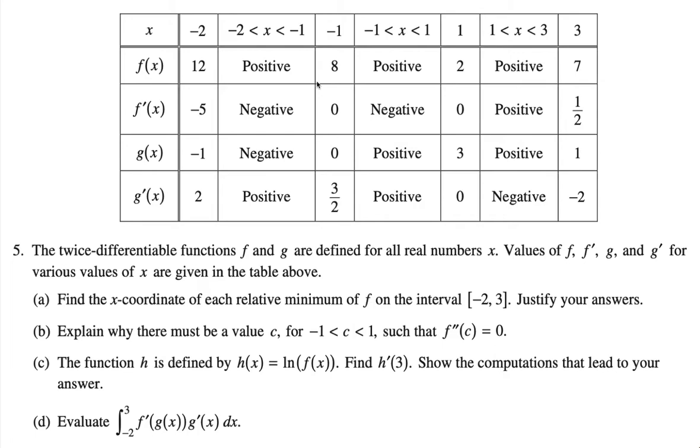Look at 2014 number 5. So here we have twice-differentiable functions f and g defined with these values. Now find the x-coordinate of each relative minimum of f.